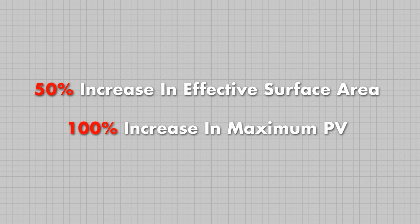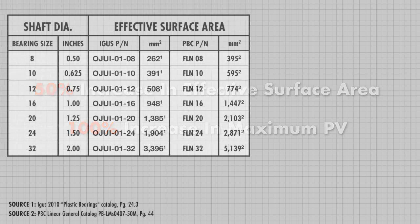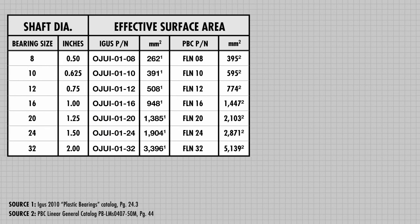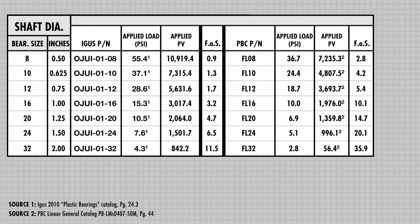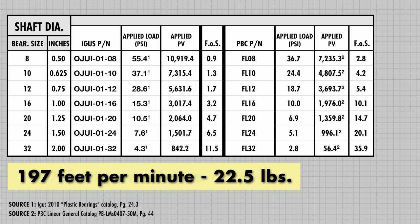Let's figure out exactly what this means by creating a table to compare the same parts as before. Since the PV value is in imperial units, let's convert the effective surface area from square millimeters to square inches. We'll add a column for maximum PV and input the values found earlier, then add input criteria for velocity and load. We'll use 197 feet per minute and 22.5 pounds. We take the applied load divided by the effective surface area to get the application's pressure in psi, then multiply by velocity to get the applied PV. Comparing applied PV to maximum PV gives us a factor of safety.